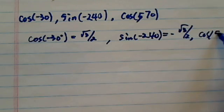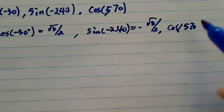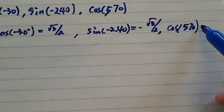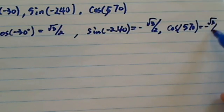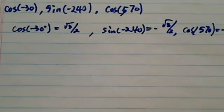And cosine of 570, let's move it over a little bit so you can see, the answer is minus radical 3 over 2. Now, if the answer is all you need, you can move on from here.